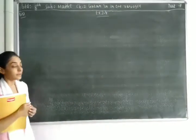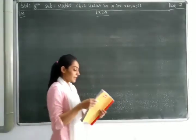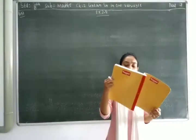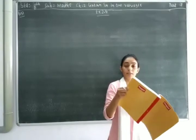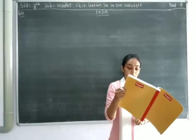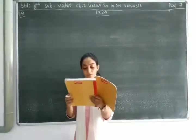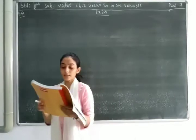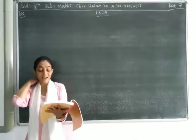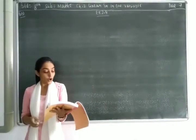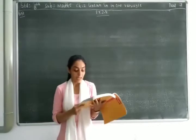So Question No. 3 says: the sum of a 2-digit number is 9. When we interchange the digits, we find that the resulting new number is greater than the original number by 27. What is the 2-digit number?